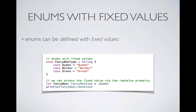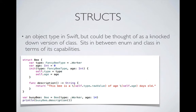Enums can be defined with fixed values. For example, 'enum FancyBeeType: String' with cases queen = "queen", worker = "worker", drone = "drone". You can access that value via the 'rawValue' property: 'let fancyBee: FancyBeeType = .queen; print(fancyBee.rawValue)' prints the string "queen".